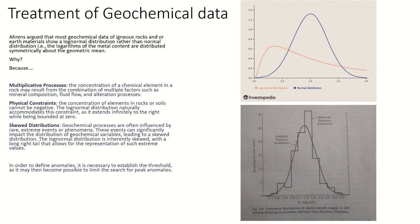Why does geochemical data show log-normal distribution? We know this elemental concentration is not due to a single process; in fact, a number of processes operate and result in the dispersion of elements. Since the dispersion is a combination of multiple factors, it is unlikely the distribution would follow a normal distribution. Therefore, it has a log-normal distribution where most background values plot on the lower side, but anomalous or higher concentrations plot on the right-hand side under the long tailing end.